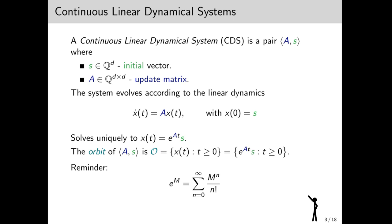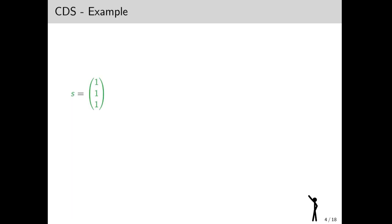Anyway, we won't get too much into this, so don't worry. Let's see an example of a CDS. Suppose we start with the initial vector s, this point right here, and let's take some matrix A.